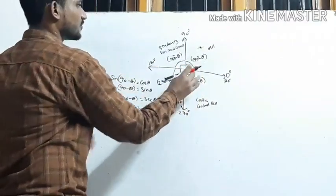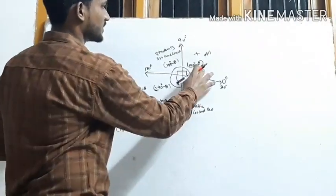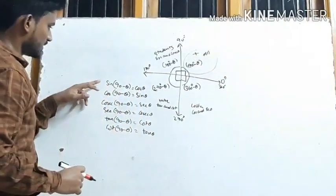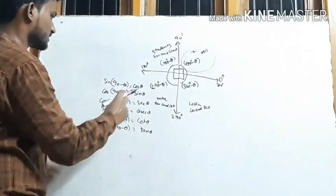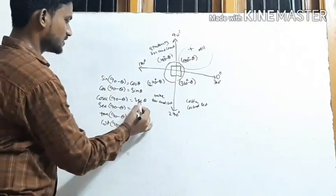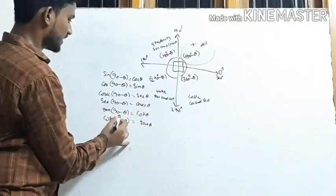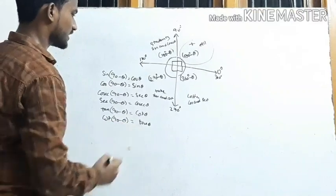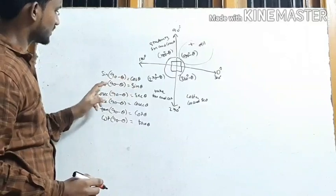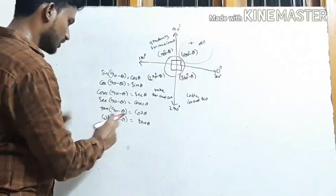For the 10th class, the first quadrant (90° minus theta) is enough. The complementary angle formulas are: sin(90 - θ) = cos θ, cos(90 - θ) = sin θ, cosec(90 - θ) = sec θ, sec(90 - θ) = cosec θ, tan(90 - θ) = cot θ, cot(90 - θ) = tan θ. When the angle involves 90°, sin and cos swap, tan and cot swap, sec and cosec swap.